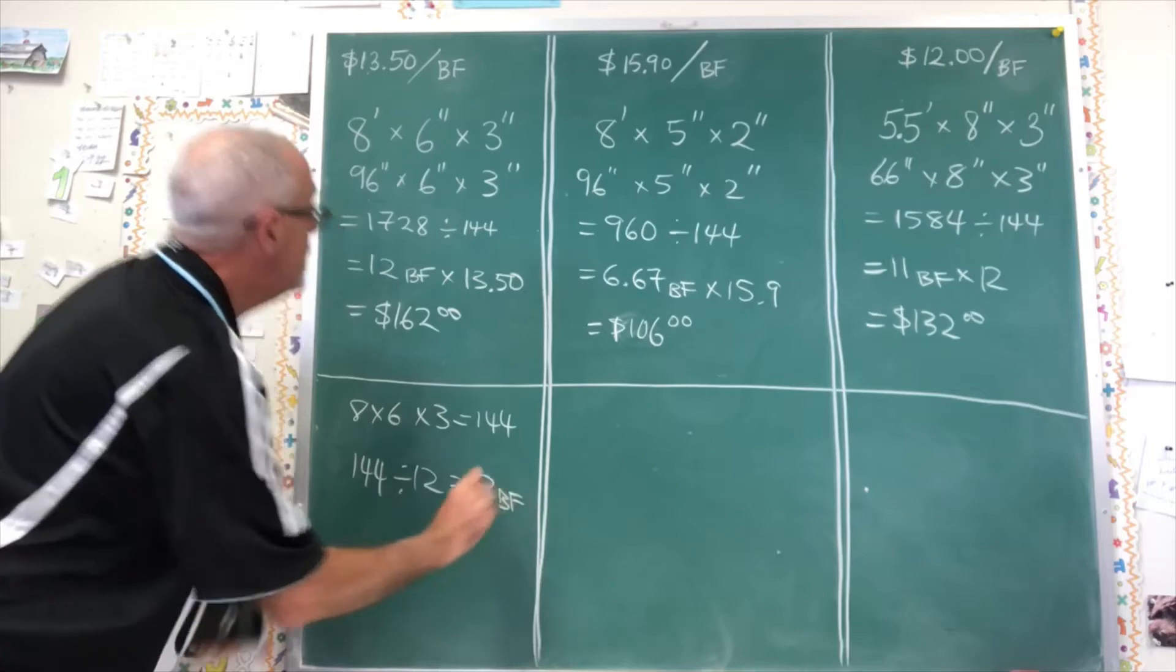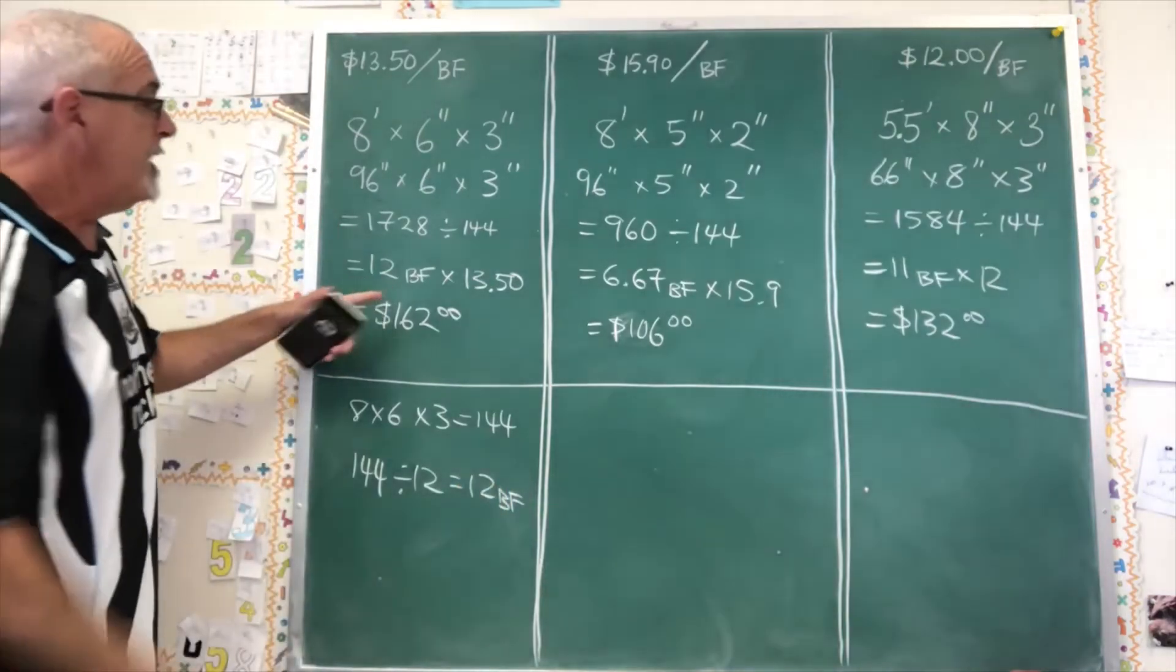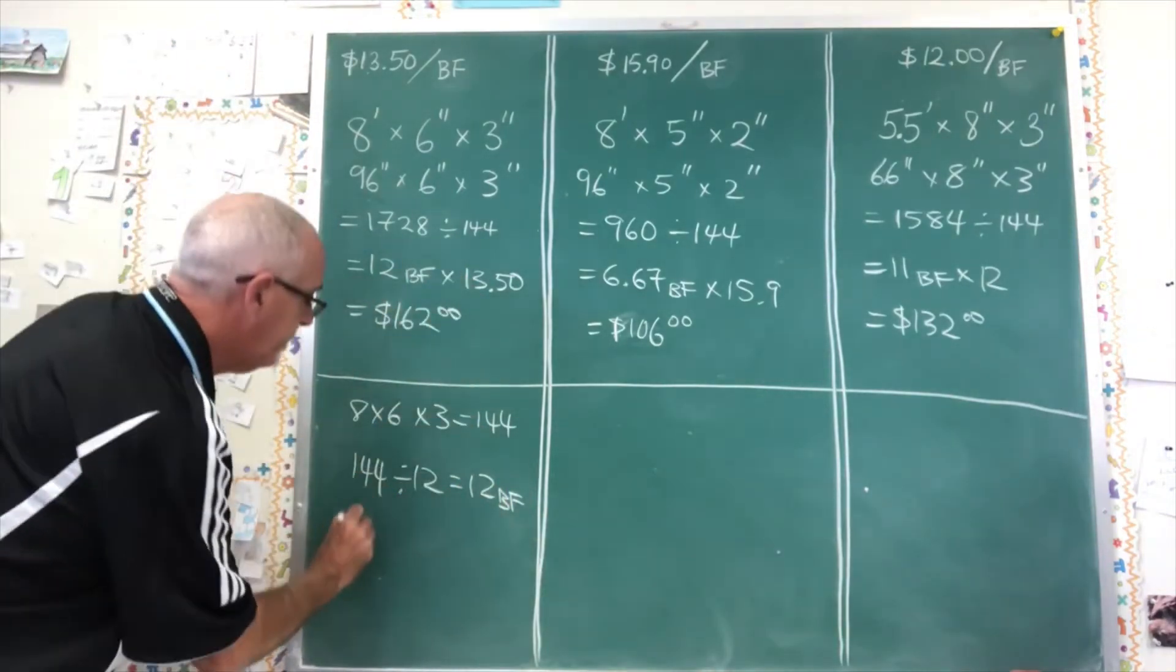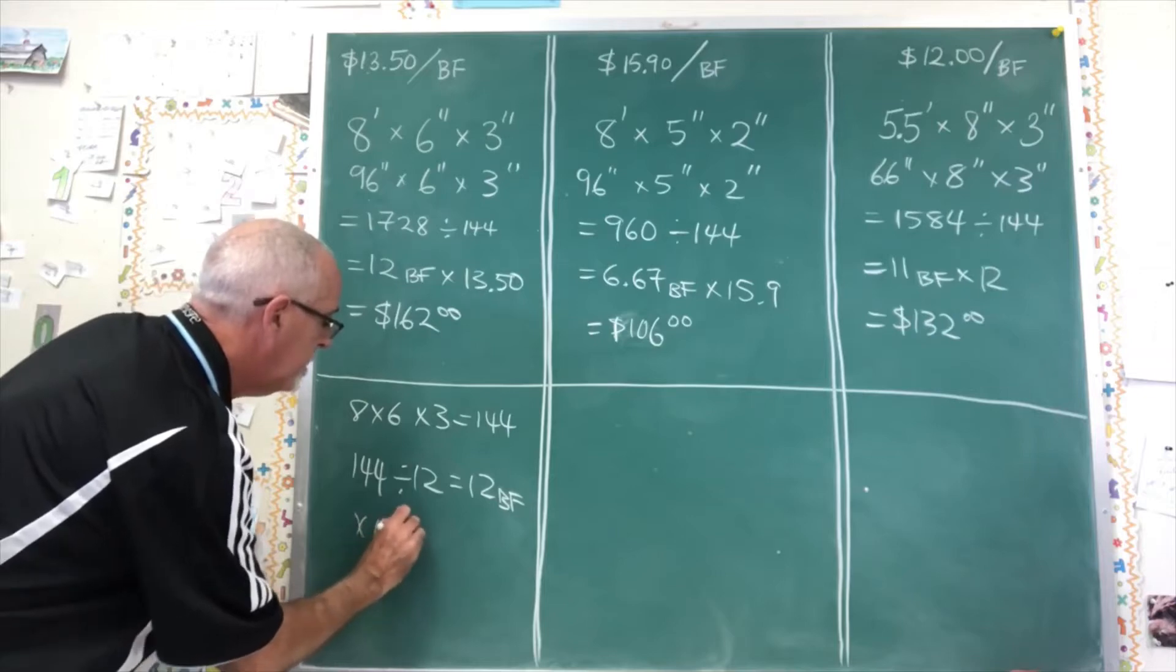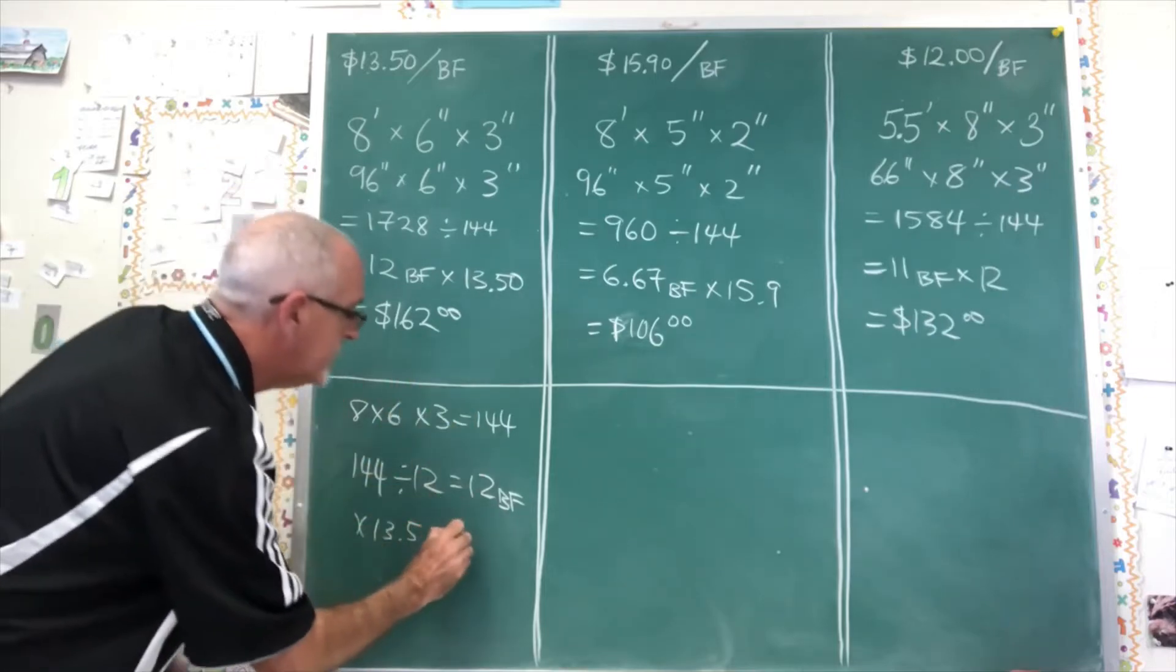And it's giving me 12. So I have 12 board feet. It's the same answer. I'm multiplying it by the 1350 and I'm getting the same price, $162.